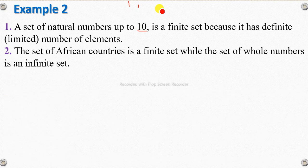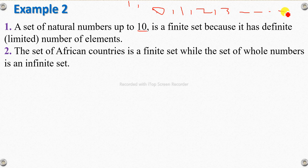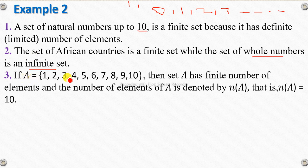For example, is the set of African countries a finite set? Yes. The set of whole numbers — is that a finite set? If A equals {1, 2, 3, 4, 5, 6}, it has a finite number of elements. The number of elements of A is denoted as n(A).